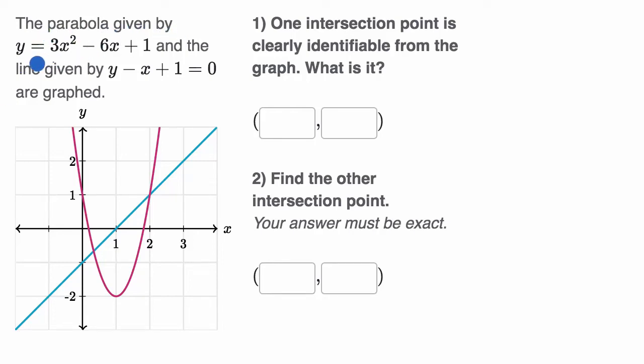We're told the parabola given by y equals three x squared minus six x plus one and the line given by y minus x plus one equals zero are graphed. You can see the parabola here in red and the line here in blue.